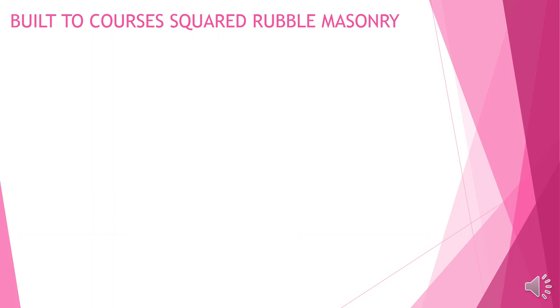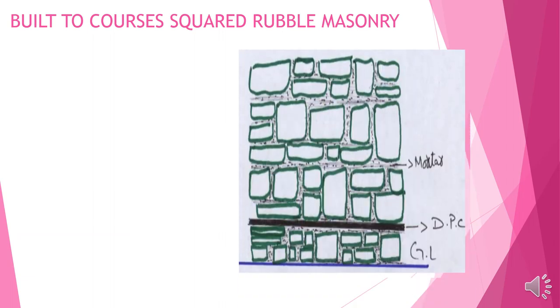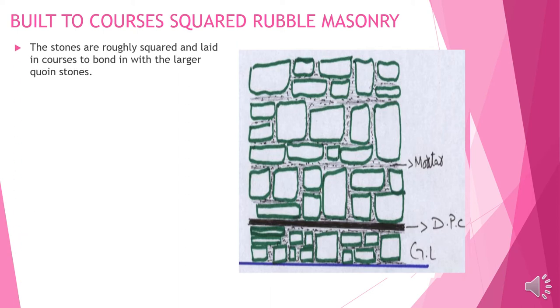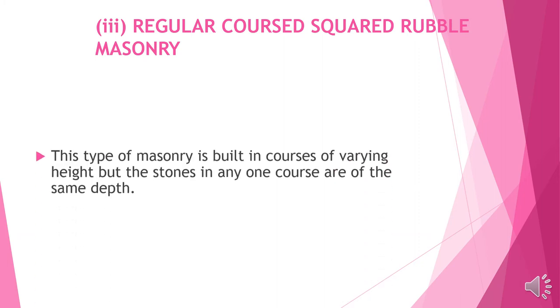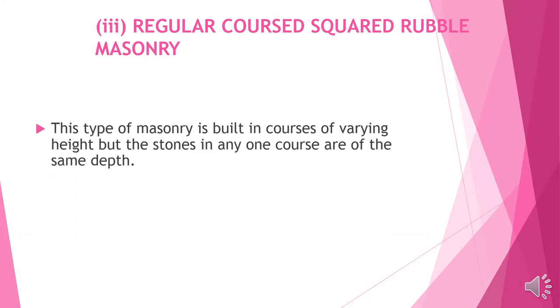Built-courses square rubble masonry: the stones are roughly squared and laid in courses in bond with the larger coin. Regular course square rubble masonry: this type is built in courses of varying height, but the stones in any one course are of the same depth.